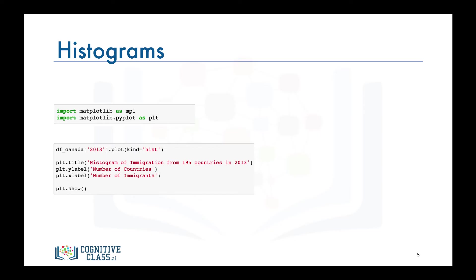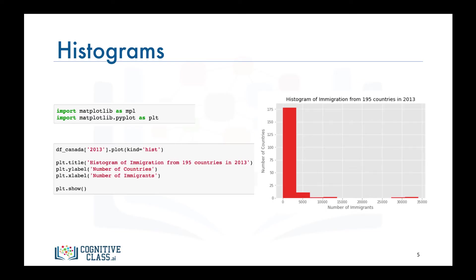Then to complete the figure, we give it a title and we label its axes. Finally, we call the show function to display the figure. And there you have it, a histogram that depicts the distribution of immigration to Canada in 2013.